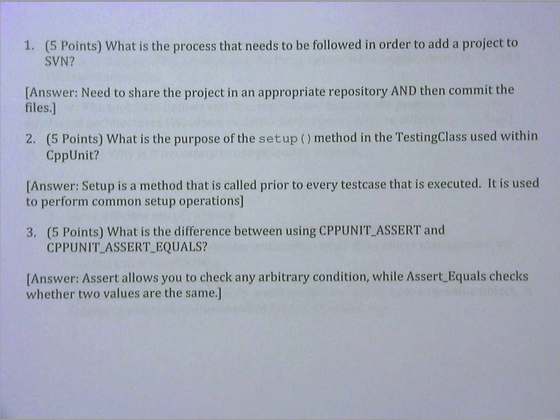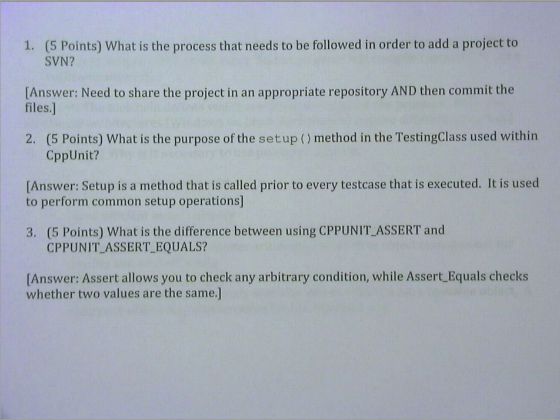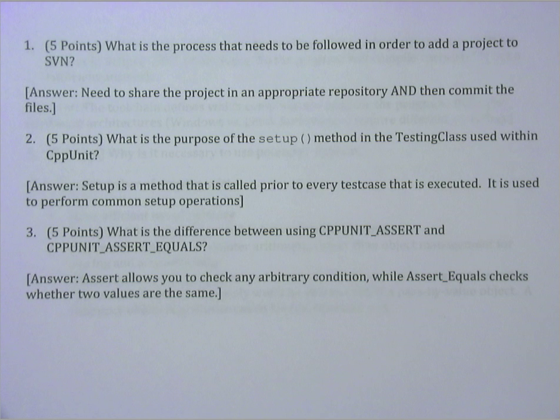So question number one was on SVN and sort of this idea of what's the process that you actually use in order to add a project to SVN. There are actually two important pieces. The first part is making sure that you actually share the project. You would have to right click on the project and find share. But more importantly, beyond all of that is making sure that you actually commit the files. That will ensure that your project is fully controlled by SVN so that any modifications you make will be captured within the repository.